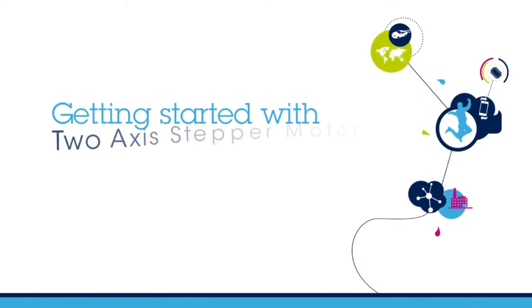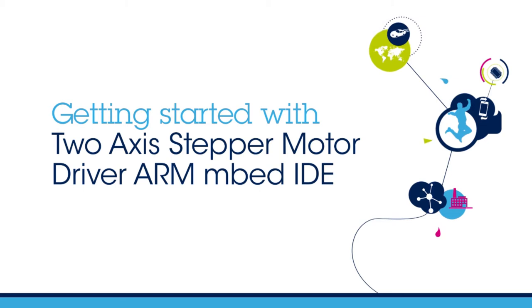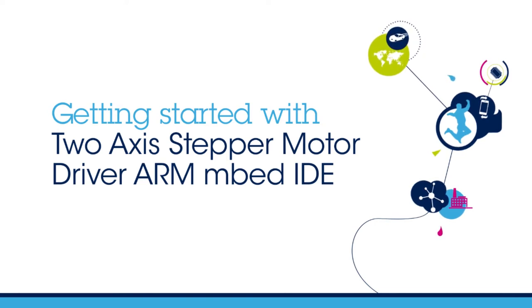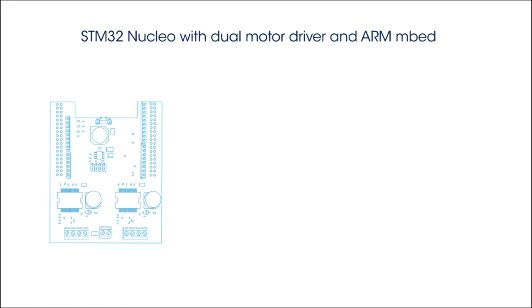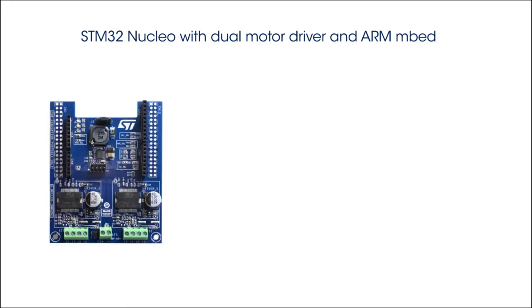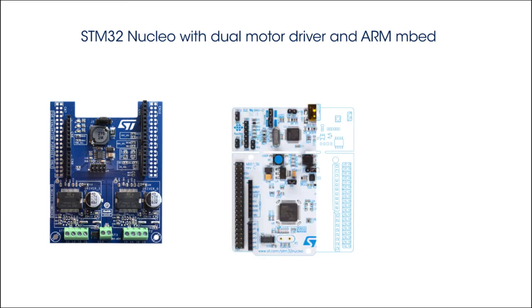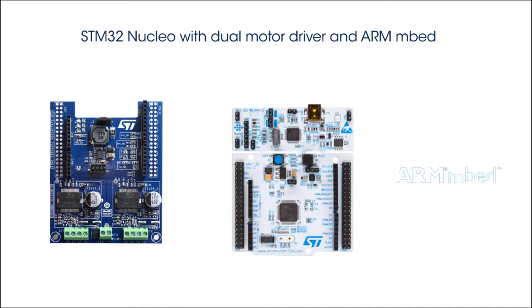Welcome to this explainer video on the STM32 Nucleo 2-axis motor control expansion board using ARM Embed Environment. This expansion board enables you to drive two low-voltage stepper motors at the same time and is intended for applications like 3D printing. We are going to explain how to get your application running in the ARM Embed Environment. The first half of the video will focus on the software setup and the second half will detail the hardware functionality available.